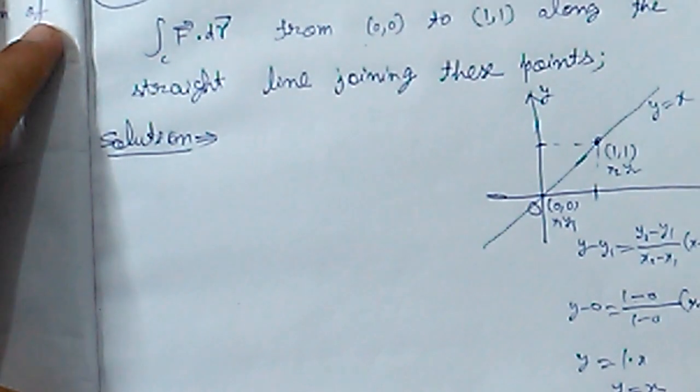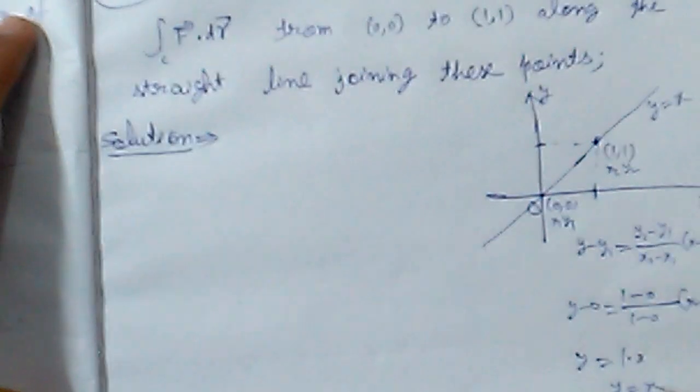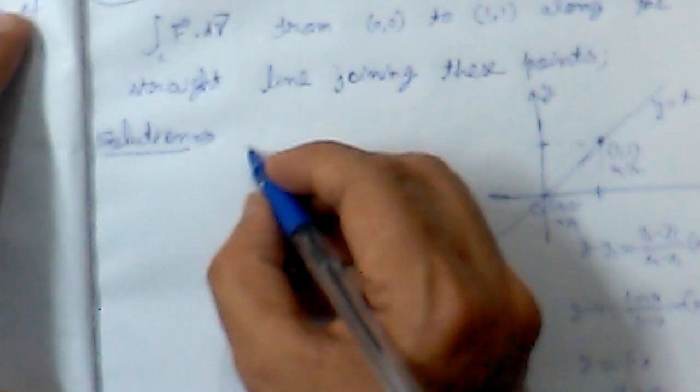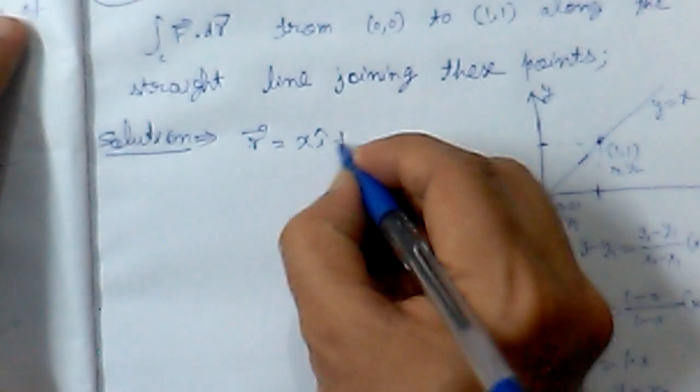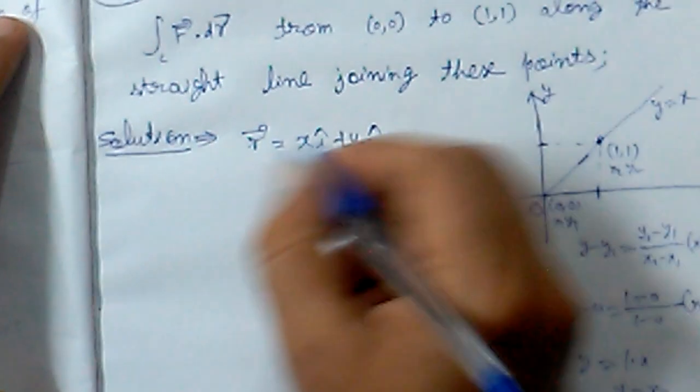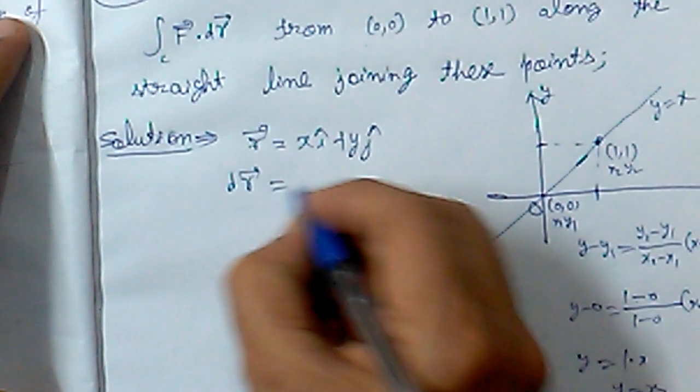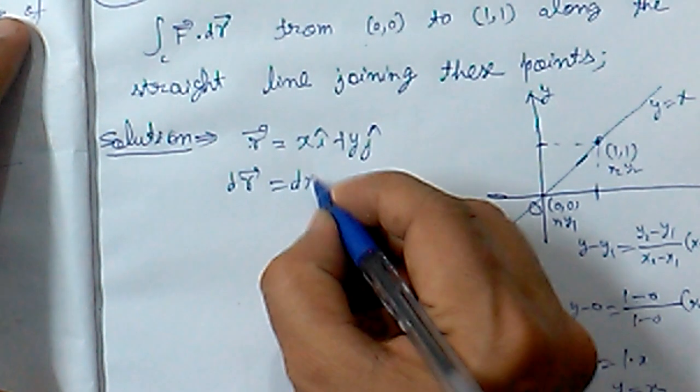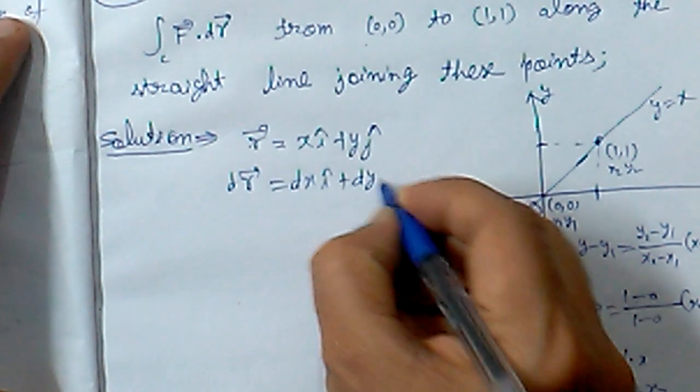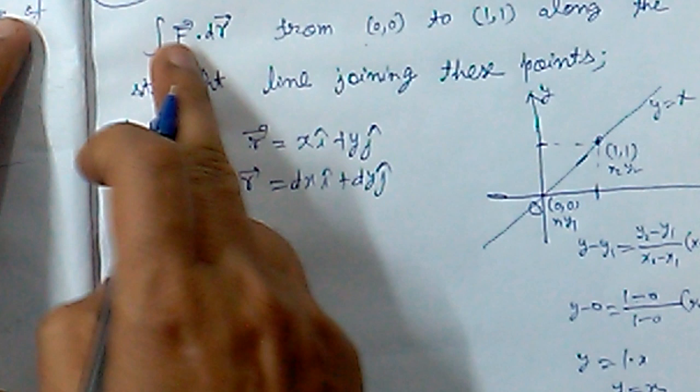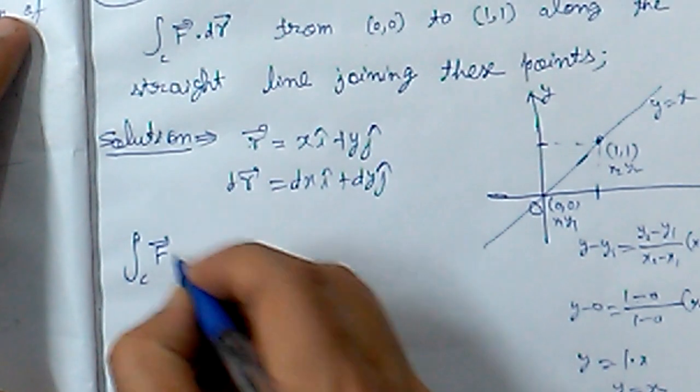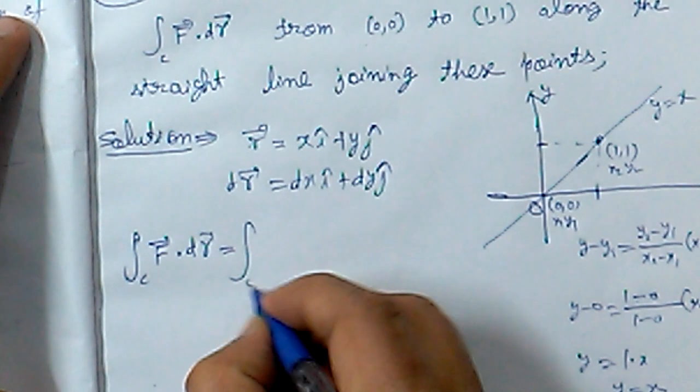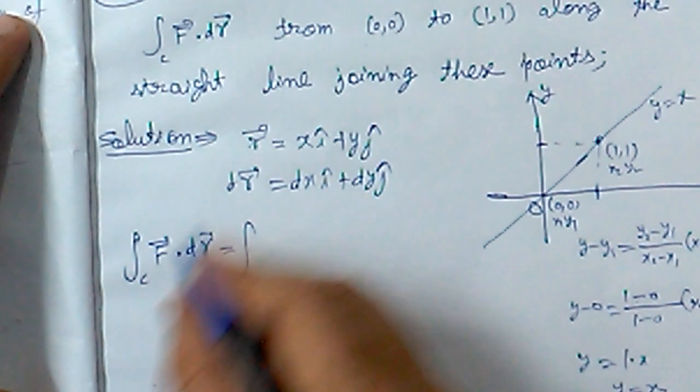Now we need to find the value of the function along this curve. We know that the r vector in 2D has value x i cap plus y j cap. If we find dr, differentiating this gives dx i cap plus dy j cap.